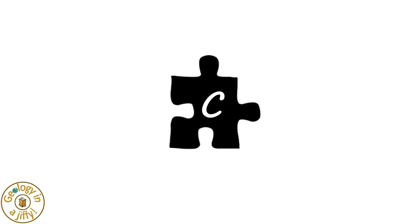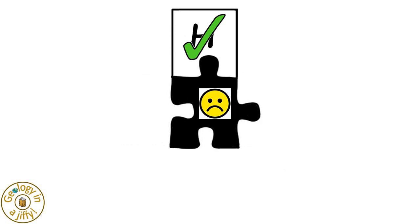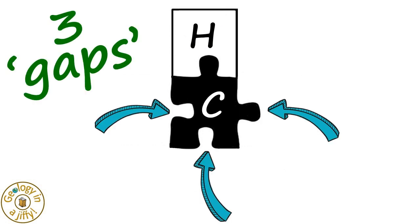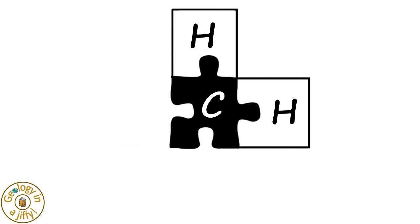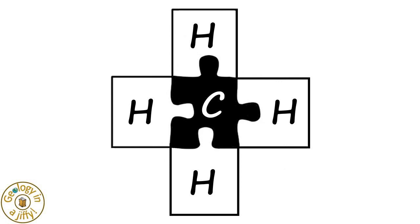If we start with one carbon jigsaw piece, we can add one hydrogen jigsaw piece. That makes the hydrogen stable. But the carbon is not yet stable, as it has three more gaps. So if we add three more hydrogen jigsaw pieces, we make the carbon stable, as there are four hydrogen jigsaw pieces. Wow!